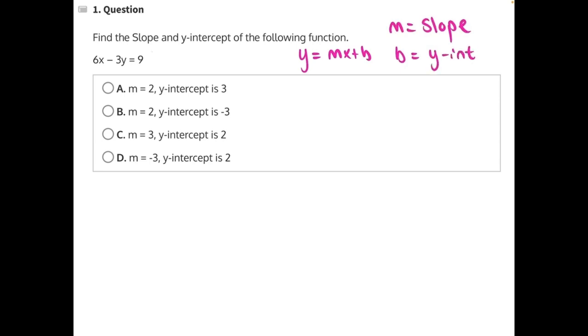So we need to take our expression and use opposite operations to move the terms around until we get something that matches this. And the easiest way to do that is to focus on isolating y. So if we want to isolate y, we need to take everything else that's not y and move it over to the other side of the equal sign.